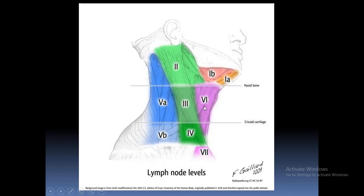Level 6 includes the anterior cervical lymph nodes: the pre-laryngeal lymph nodes present behind the larynx, the pre-tracheal lymph nodes present in front of the trachea, and the paratracheal lymph nodes present along the trachea. Level 7 includes the upper mediastinal lymph nodes. These are the different levels of cervical lymph nodes.